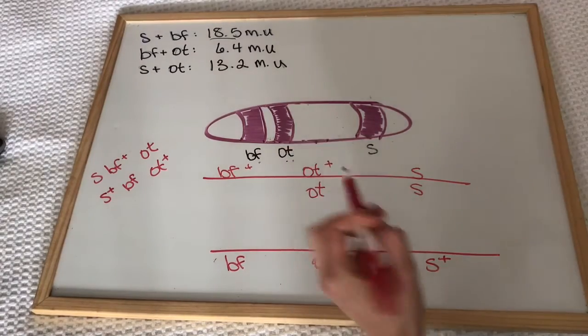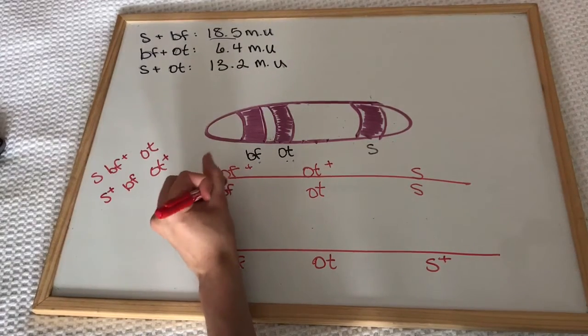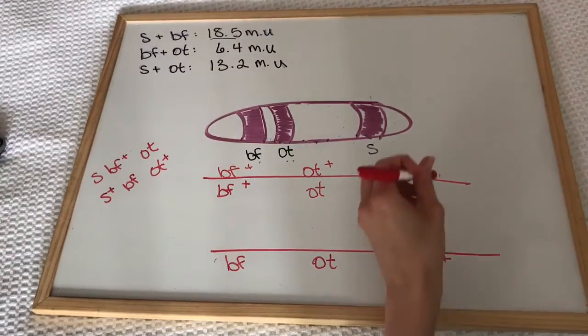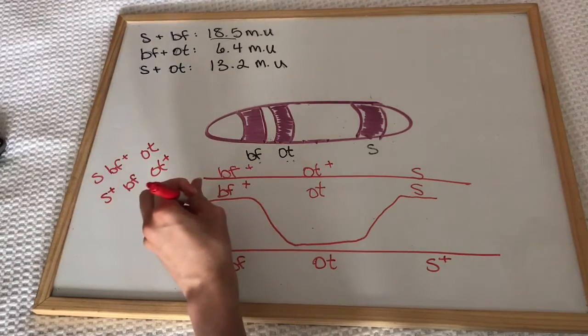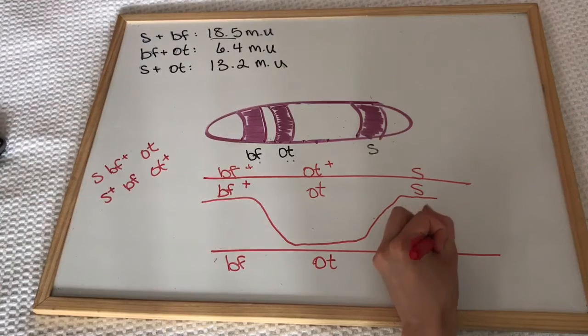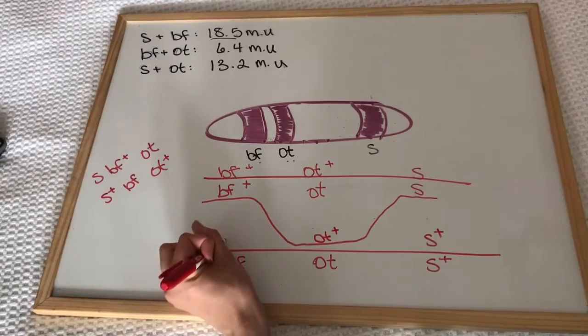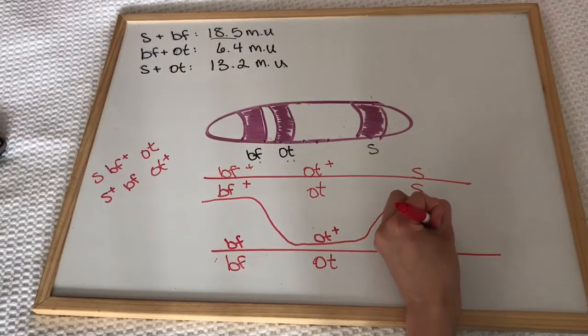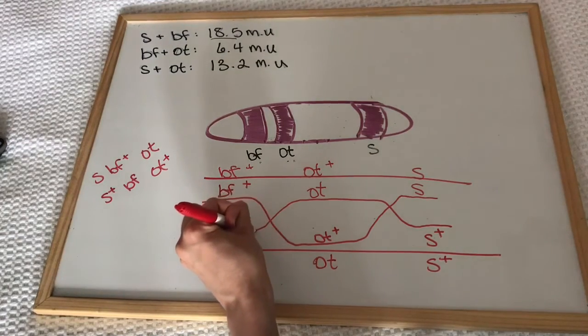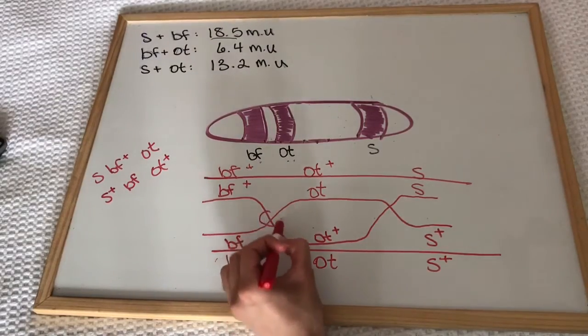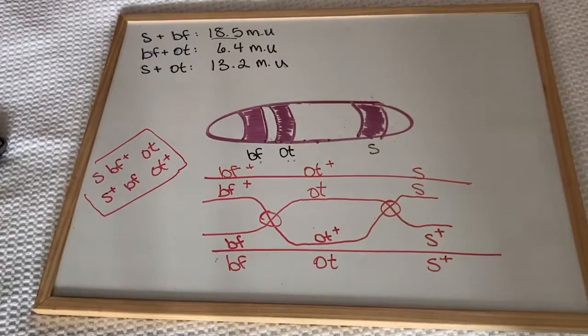In order for there to be a recessive S, a recessive OT, and a BF dominant, you're going to have to start here, go down to the recessive OT, and come back up to the BF. Same thing if you wanted to have a dominant S, a dominant OT, but a recessive BF—you're going to have to start at the S dominant, travel over to the OT, and come back down. This shows us that we have double recombinants for these two genotypes.